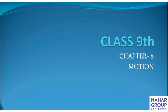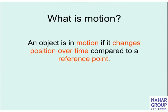Now let's proceed to our chapter, which is motion. What is motion? An object is in motion if it changes position over time compared to a reference point. If your mother cooks in the kitchen, we can say she is in motion. If a book is lying on a table, the book is at rest with respect to the table.